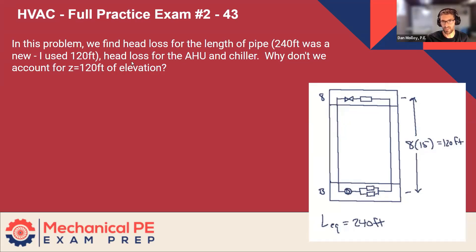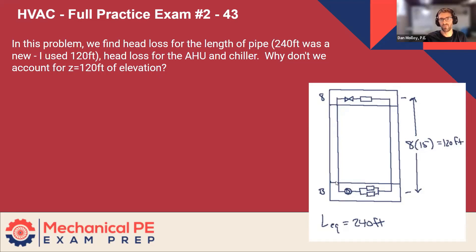I used 120 feet head loss for the AHU and chiller. Why don't we account for Z equals 120 feet of elevation? So the question was, what's the head added by the pump? Anybody have any ideas here? Why don't we account for Z equals 120 feet of elevation? You can unmute and just shout it out or type it in the chat. Or maybe you think we should account for the 120, in which case I'd like to hear the arguments.